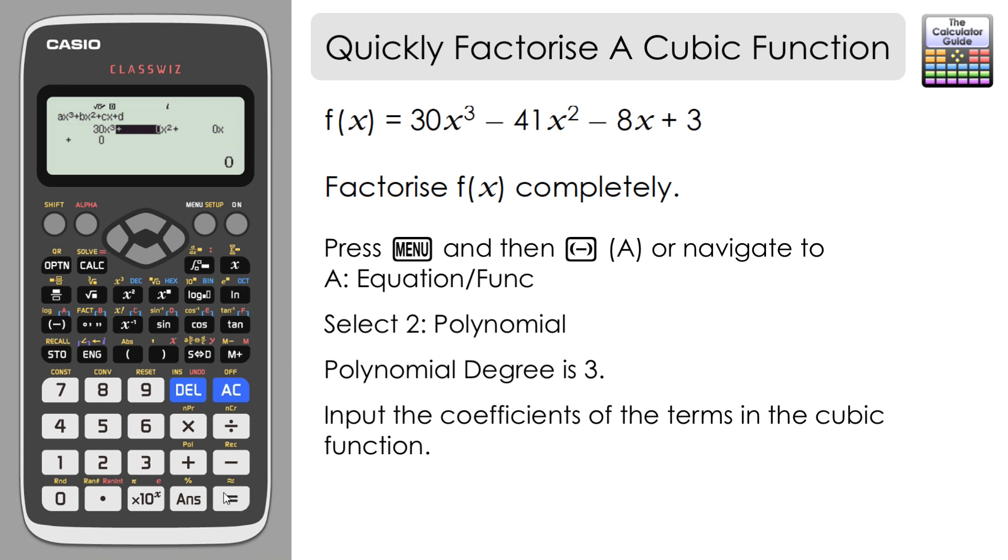Input 30x³. Press equals and it will automatically scroll to the next coefficient: -41x², then -8x, and finally +3. Press equals again to confirm.